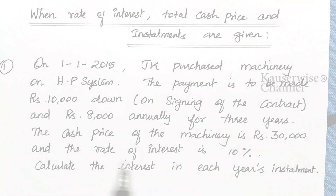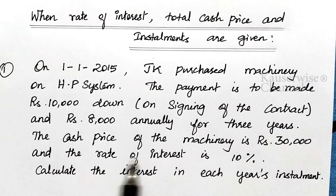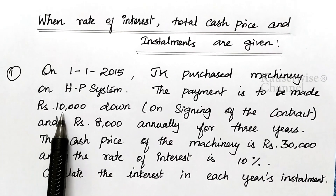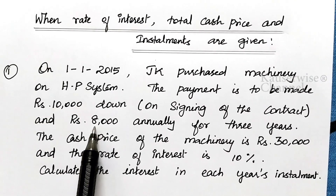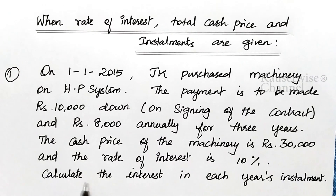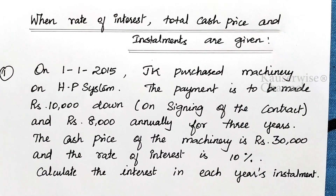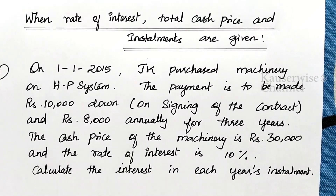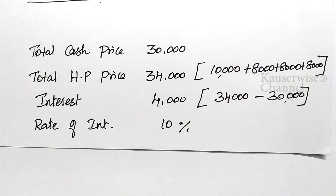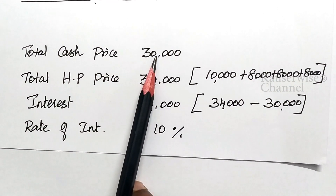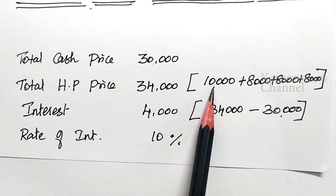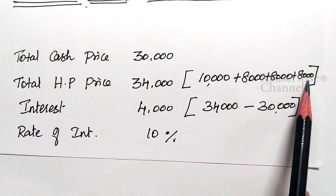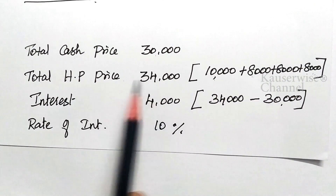The rate of interest is 10% and the cash price is 30,000. Down payment is 10,000, and each year installment amount is 8,000 rupees. With this information, they ask you to calculate interest in each year's installment. Each year's installment consists of part of cash price plus interest. The hire purchase price is: 8,000 × 3 = 24,000 plus down payment 10,000, total 34,000. Cash price is 30,000, so interest total is 4,000 rupees.